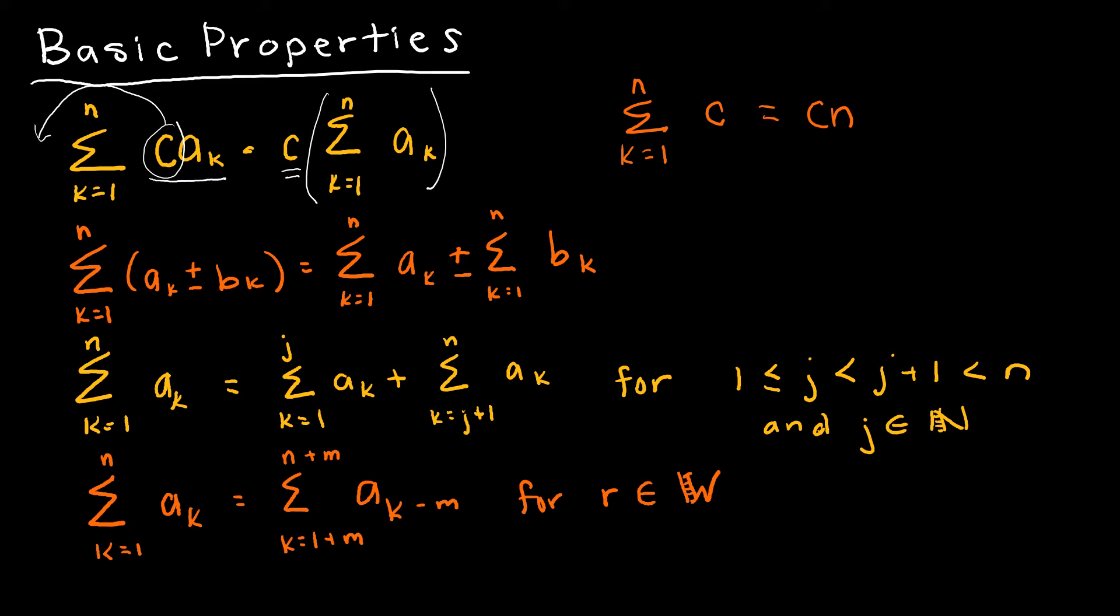Another property, and this one's very important, if I'm taking the summation as k goes from 1 to n of just some constant, then essentially what I'm doing is I'm taking c times n. Because what's going to happen is I'm going to end up with c n times. The first one would just be c, when k is 2 I would have c, when k is 3 I would have c, and that would continue on until I had n total c's. So n times c is what happens if you have just a constant.